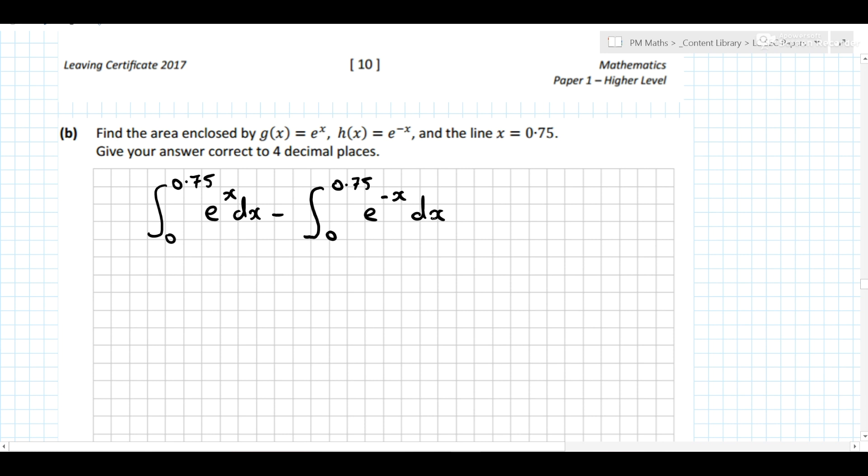Now they're definite integrals, so we don't need to worry about our plus c. So how do you integrate e^x? Well, if you look at your log tables, it'll tell you that the integral of e^x is just e^x. We're going to come along to a little variation of it when we talk about over here. So integral of e^x is just e^x. I'm going to do that between 0.75 and 0.